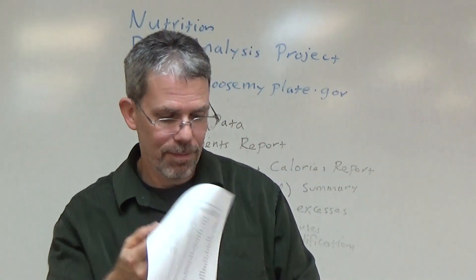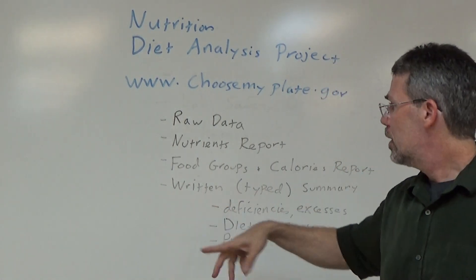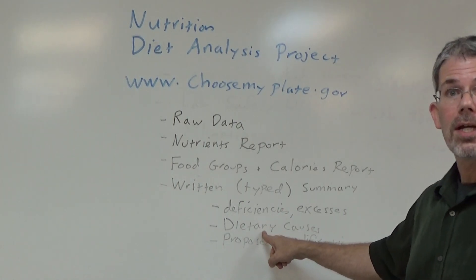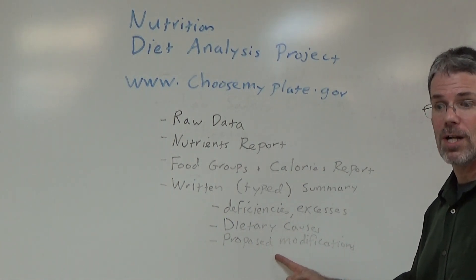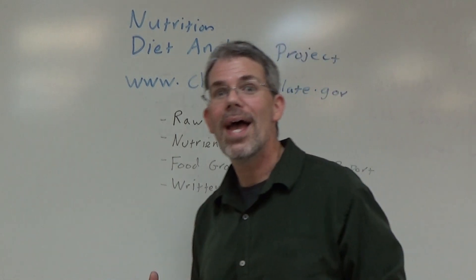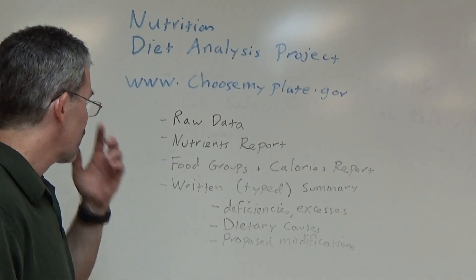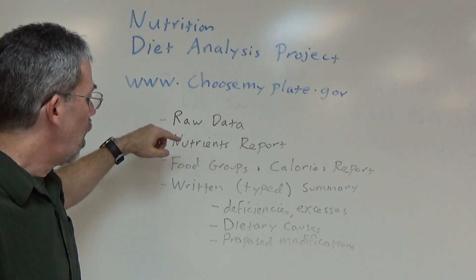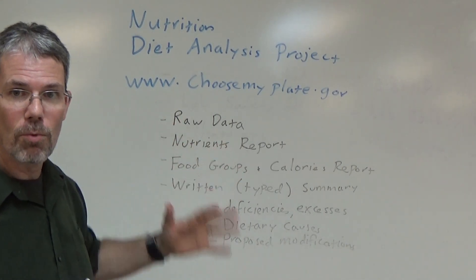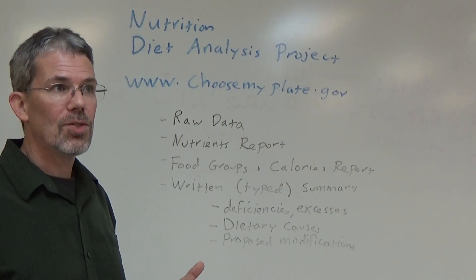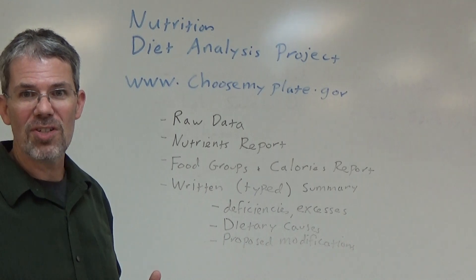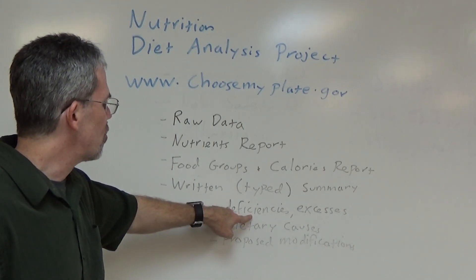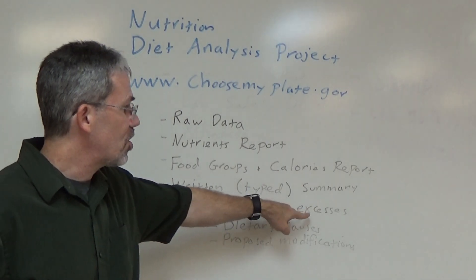Make sure you get those printouts because you need them to do your written summary. Your written summary has to be typed and must include nutrient deficiencies and excesses, dietary causes for these deficiencies and excesses, and proposed dietary modifications. You are not required to actually make these modifications — just required to propose them. Okay means you're getting the right amount and achieving the target value. Over means an excess, and under means a deficiency.